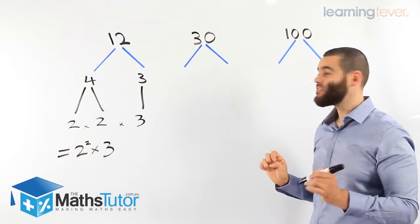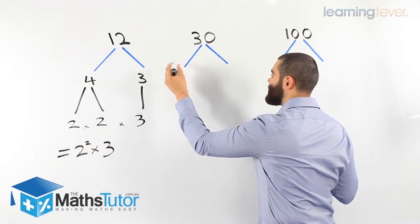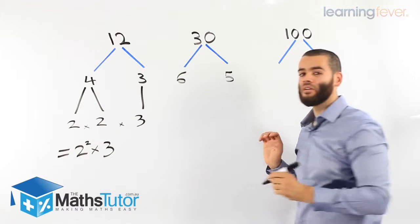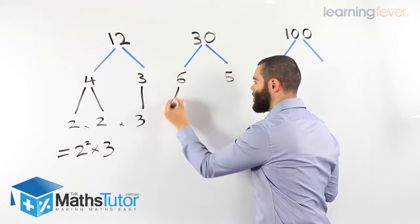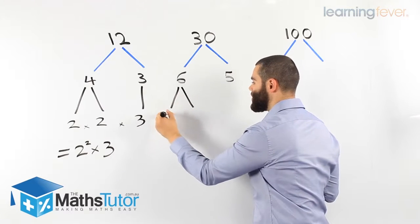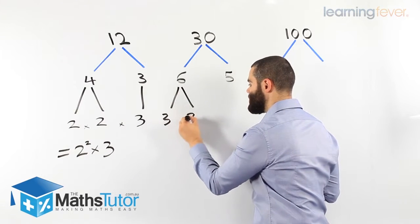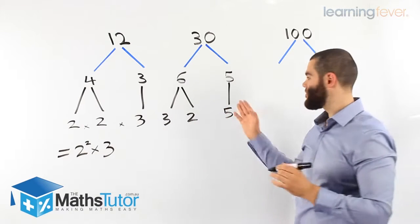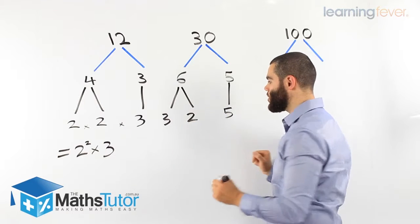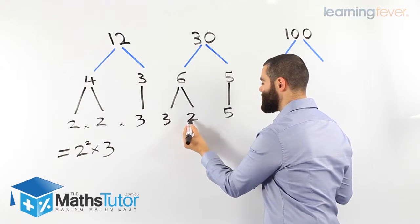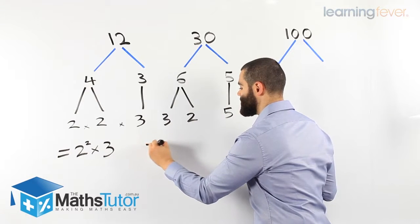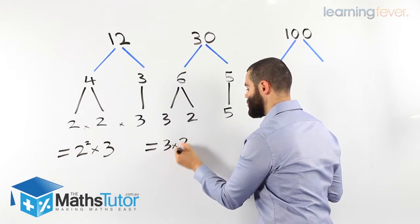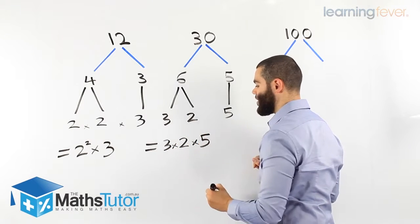30. Once again, we look for the factors of 30. I'm going to choose 6 times 5. 6 times 5, I want to break down. 6 becomes 3 times 2 and 5 is a prime number, so it's just 5 because it doesn't have any factors except 5 and 1, while 6 has 3 times 2. Now we notice this is a prime, this is a prime, and this is a prime number, so our answer will be 3 times 2 times 5.